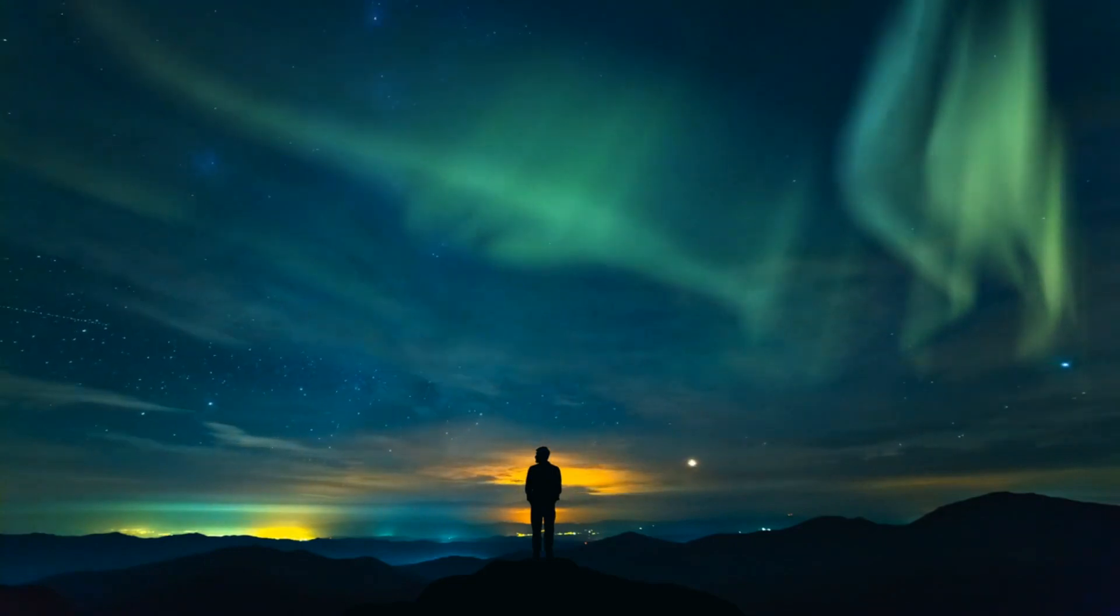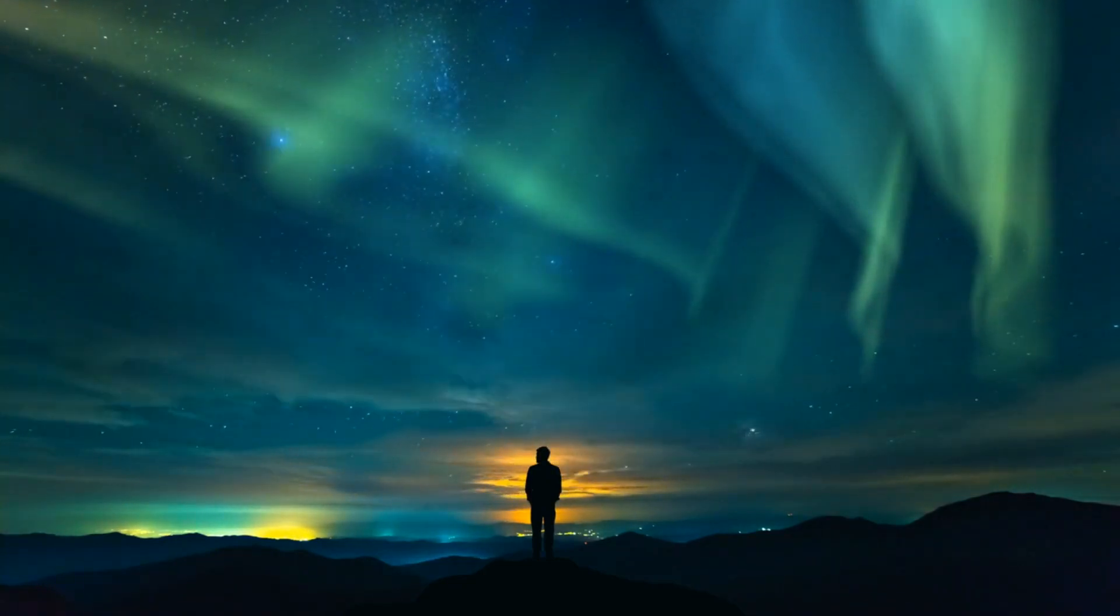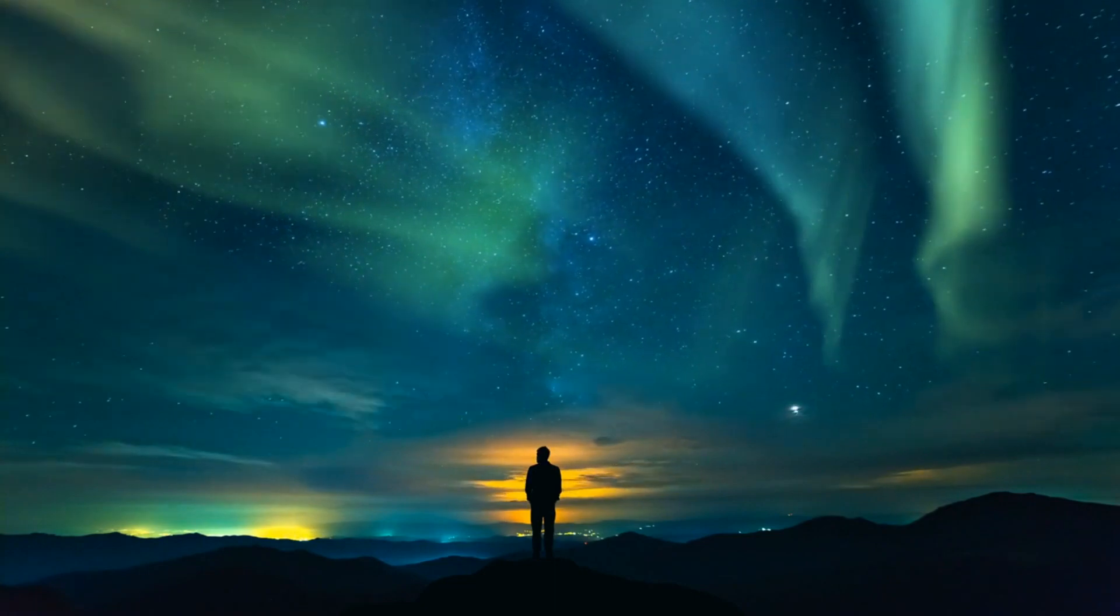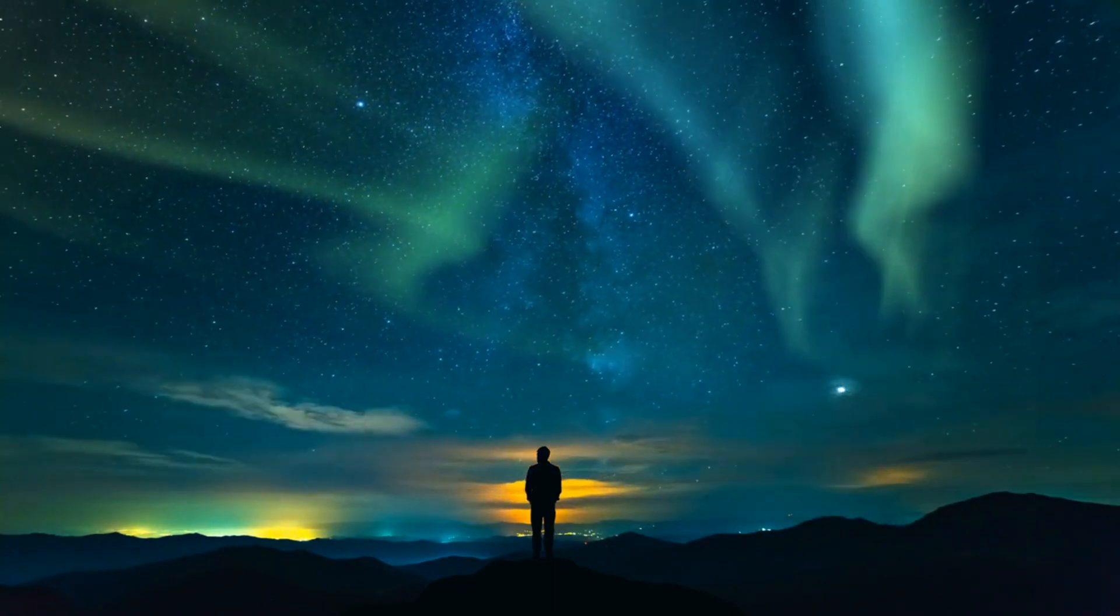Geomagnetic storms produce stunning auroras, commonly known as the northern and southern lights, illuminating the polar skies in a mesmerizing dance of colors.